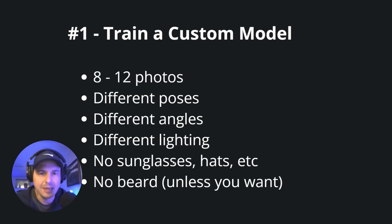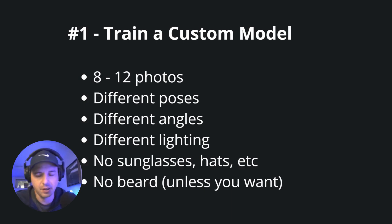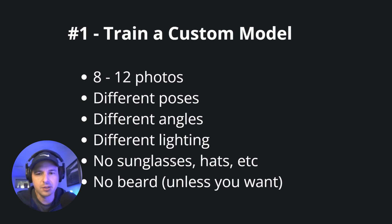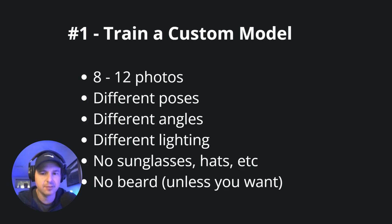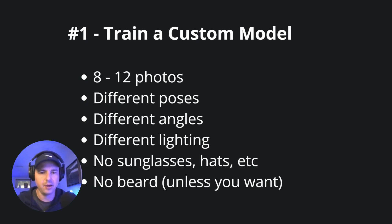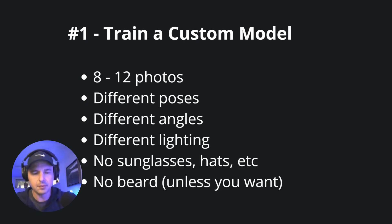The first step you need to do is train a custom model. If you ever see free ones advertised that say 'upload one photo, takes three minutes' — it's never going to work. You need eight to twelve photos of yourself. These don't have to be amazing photos; they can be selfies or just someone taking a few photos in the living room. But you want different poses, different angles, and preferably different lighting so the model has something to learn from. Don't wear a hat, sunglasses, or a beard unless you want those features. You want to look how you want to look, but from different angles and lightings — give it enough images to train on without confusing the model.